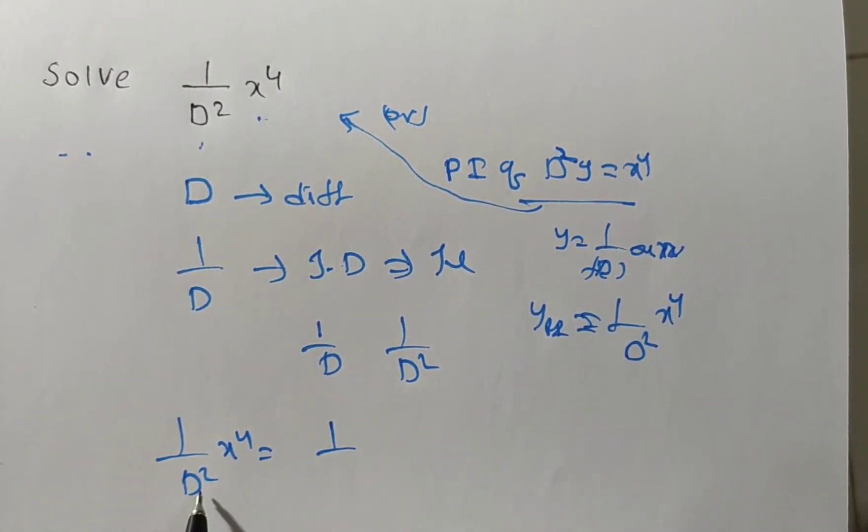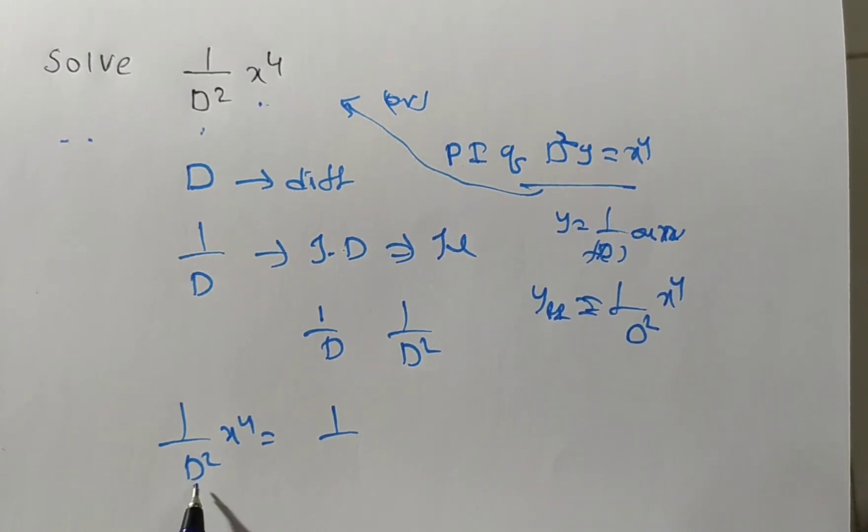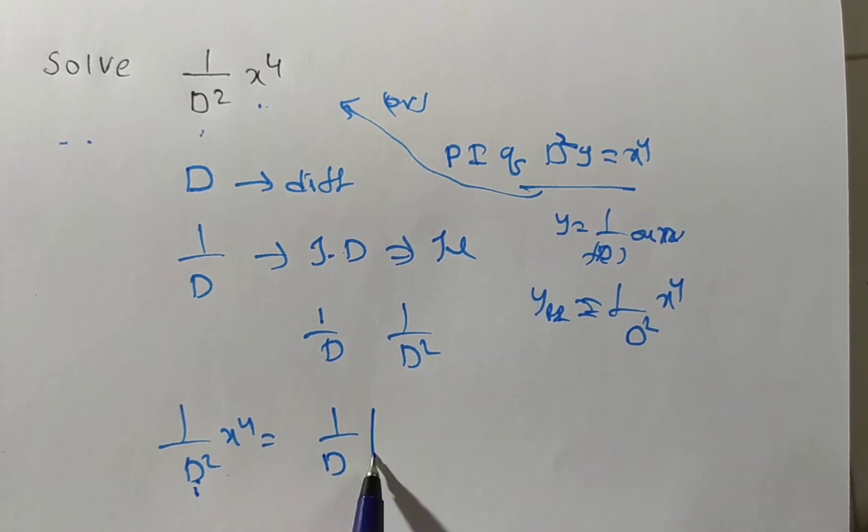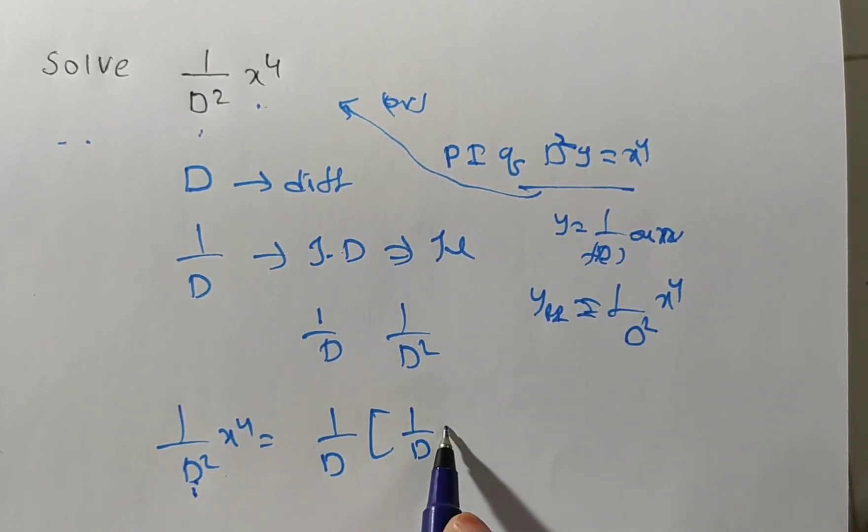Now they are given 1 by D squared x to the power of 4. Is there any arbitrary constant plus 3 plus 4 plus 5 like general method? No, we can apply the direct method. In this case, you have to integrate one time.